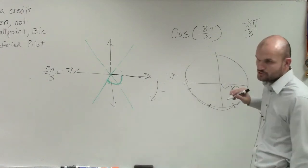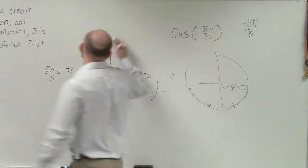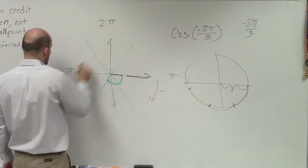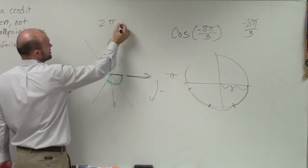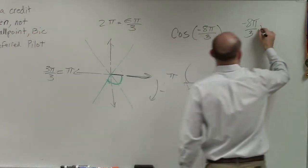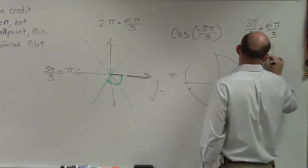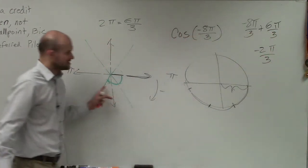So what would adding 2π look like? Well, remember, if 2π in terms of thirds is going to be the same thing as 6π over 3, right? So if I add 6π over 3, therefore I have negative 2π over 3, which is this angle.